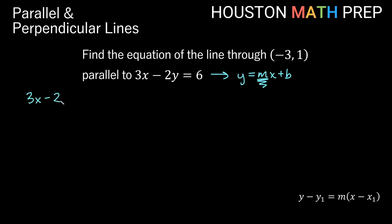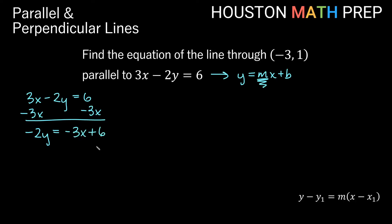So starting with 3x minus 2y equals 6, to solve for y we subtract 3x from both sides, giving us negative 2y equals negative 3x plus 6. Then we divide everything by negative 2. So we end up with y equals positive three halves x — because negative divided by negative gives a positive — and then 6 divided by negative 2 gives us negative 3 for the y-intercept.